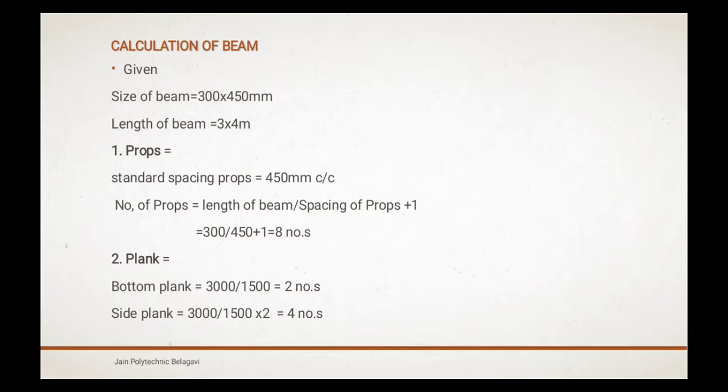Calculation of beam: given size of beam is 300 mm by 450 mm and length of beam is 3 by 4 meters. First one is props. What is props? Props provide the ideal and the most economic method of support for all kinds of formwork.